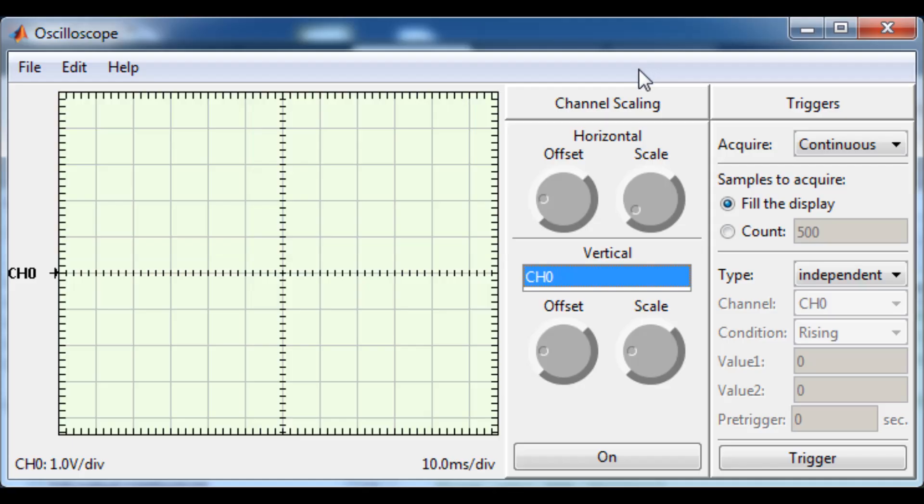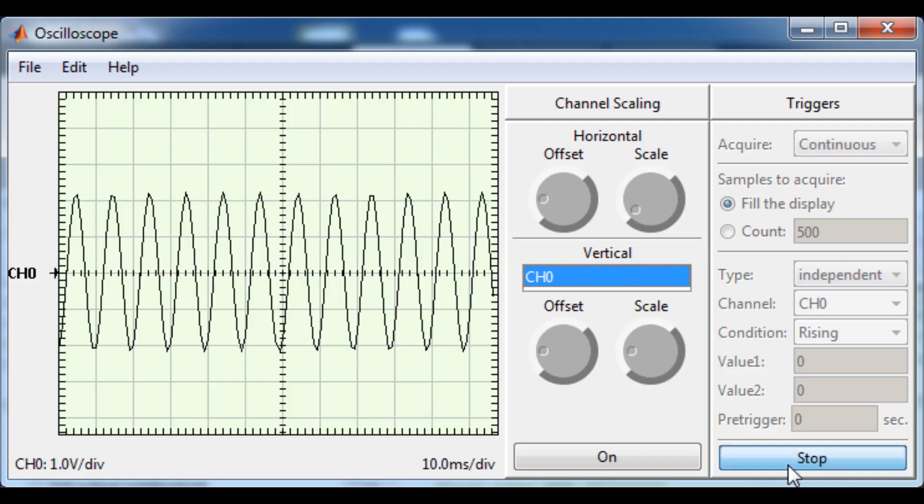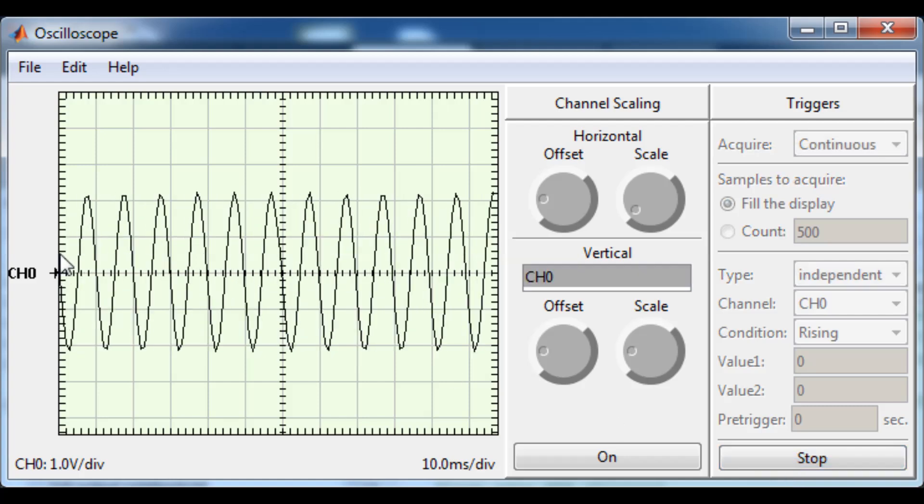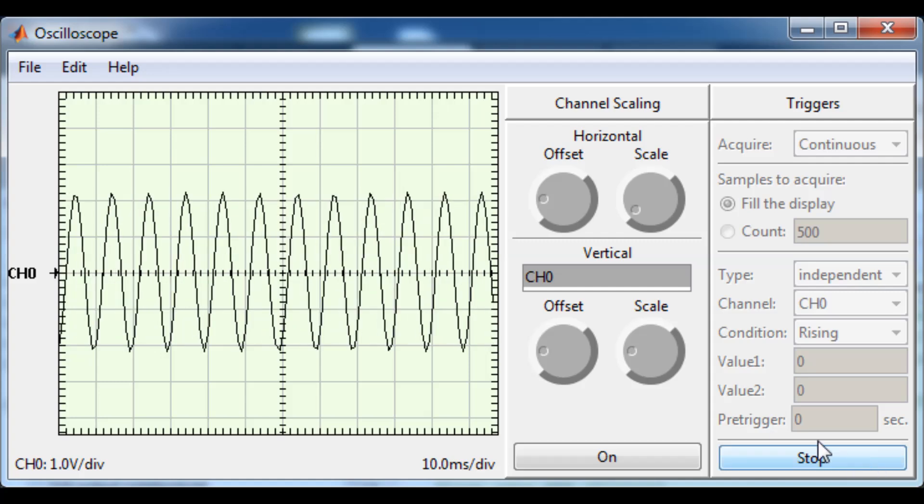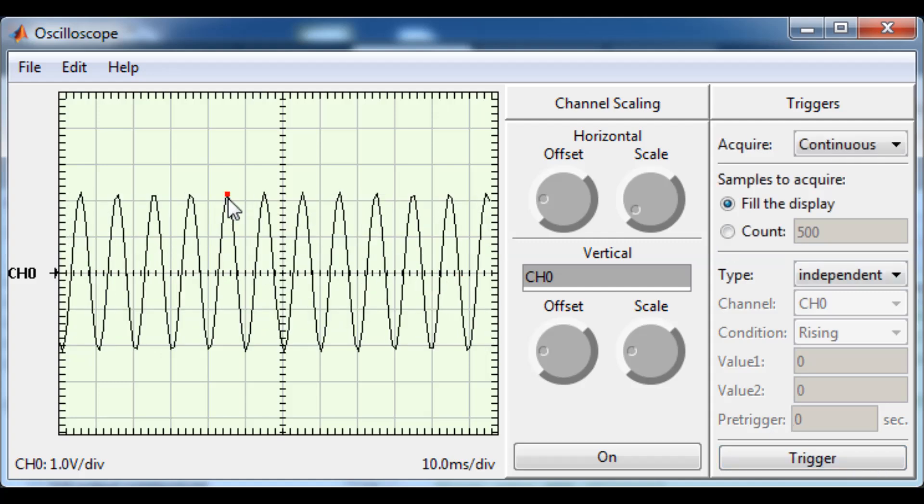I still have my data acquisition system connected to the function generator so now all I have to do is click trigger down here and now you can see this looks more or less like the oscilloscope. If I click stop that was sampling data continuously and if I hover over points on this graph here you can see that it'll show me the values of the time and the voltage that it's sampled there.